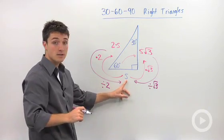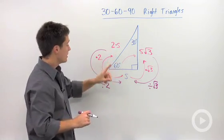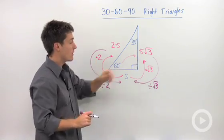So the key leg in this triangle is the shorter leg, because from here you can find your hypotenuse by multiplying by 2, and you can find your longer leg.